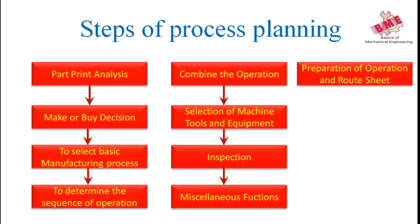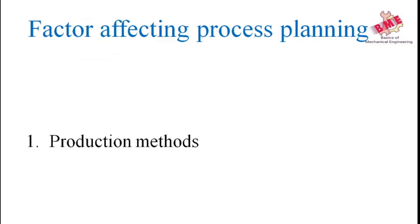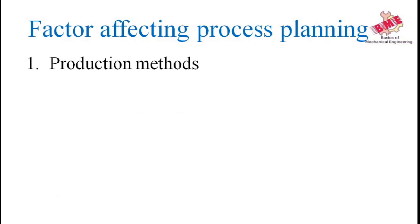The operation and route sheet lists the manufacturing operations in the decided sequence, along with tool setup, operation time, and the machines associated with each operation. These are all the steps of process planning. Now we will see the factors affecting process planning.